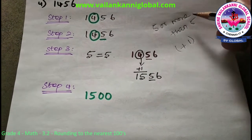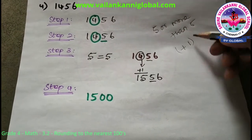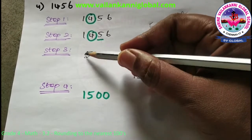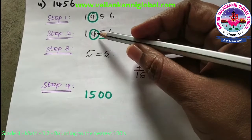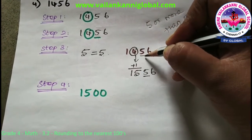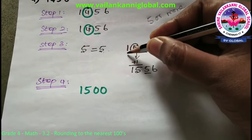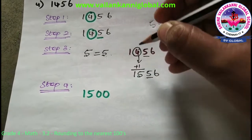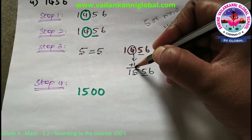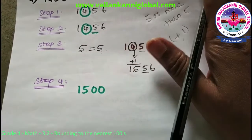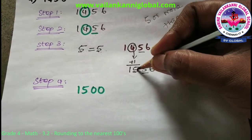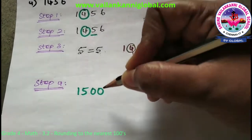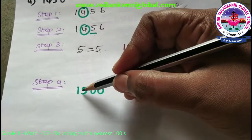Since 5 is equal to 5, it belongs to the bigger group, so add 1 to the hundreds place. In 1456, the thousands place 1 is constant, and 4 plus 1 equals 5, so the hundreds place becomes 5. Step 4 — change all digits to the right of the hundreds place to 0. So the two digits 5 and 6 both become 0. The final answer is 1500.